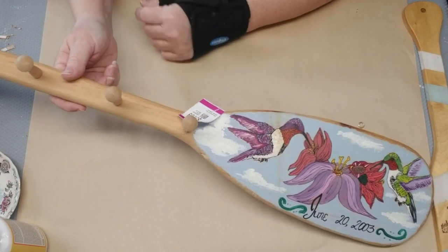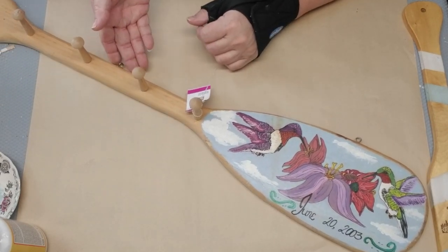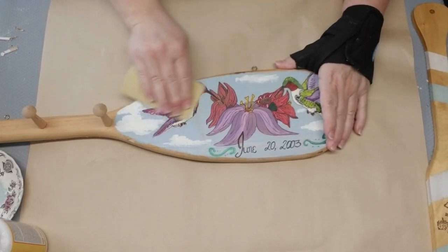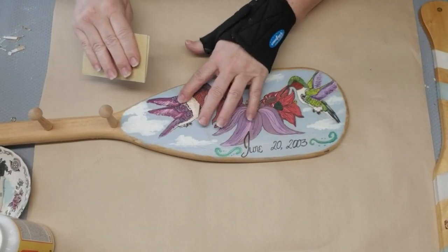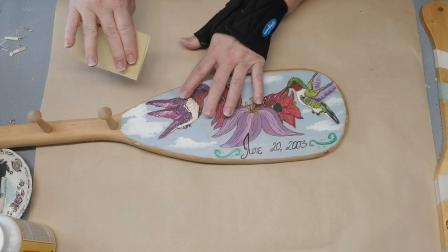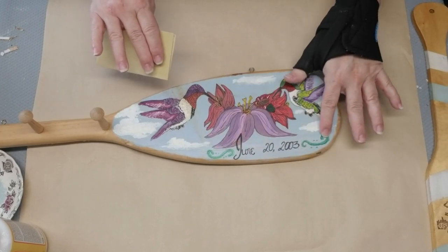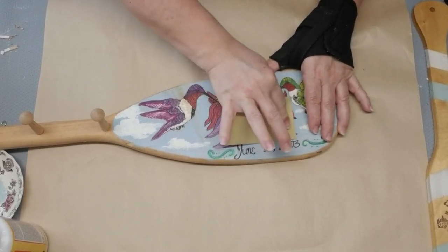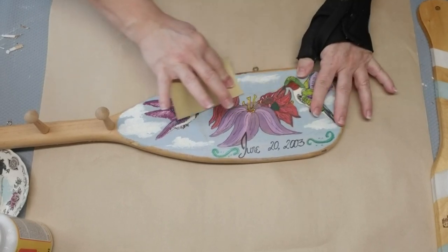You're probably thinking, oh my gosh, another paddle, but yes, I found this one for $2.99 and it's much bigger with hooks on it. This design that someone painted on it is dated June 20th, 2003, and whoever painted this did a really beautiful job, but it's not my style. So I'm sanding it down to make sure any bumps from the paint are nice and smooth.